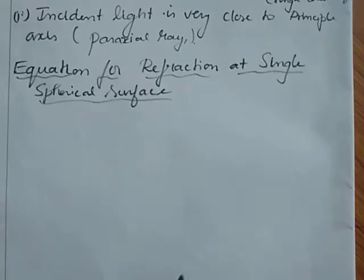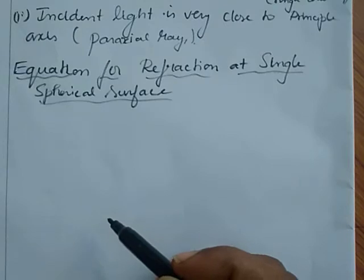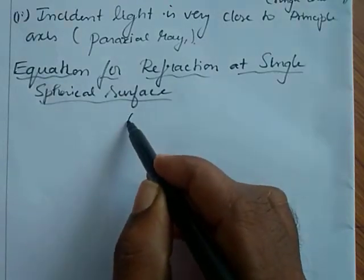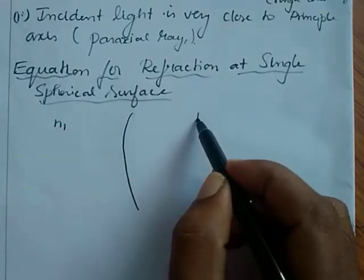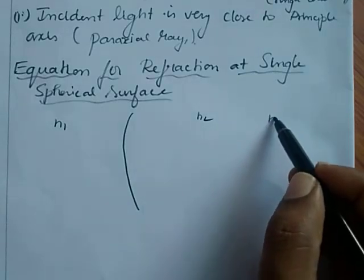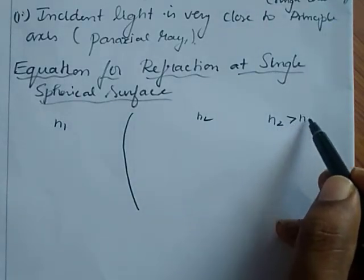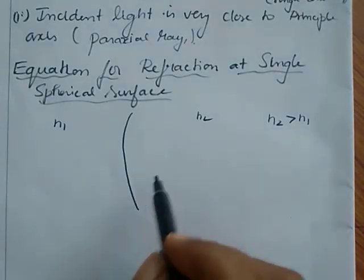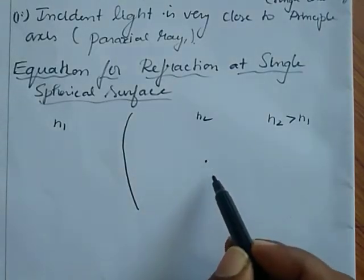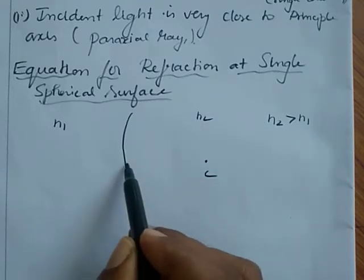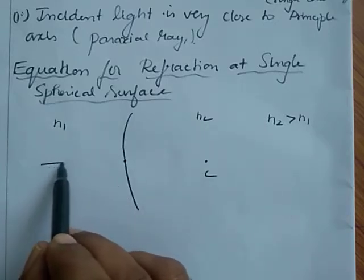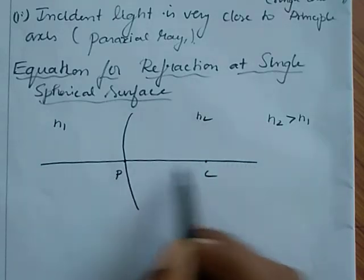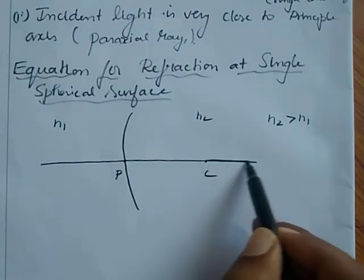Here I consider two transparent media with refractive indices N1 and N2 that are separated by a spherical surface. The condition is that the refractive index of the second medium is greater than the refractive index of the first medium. Here this is the center of curvature C, and this is the pole of the spherical surface. A line joining the pole and the center of curvature is known as the principal axis.